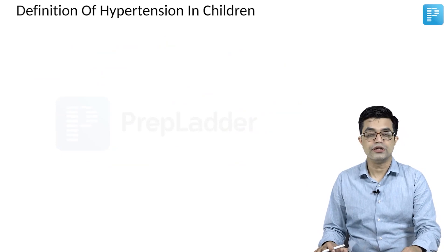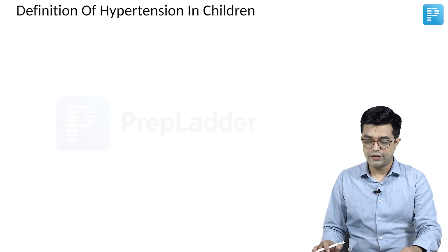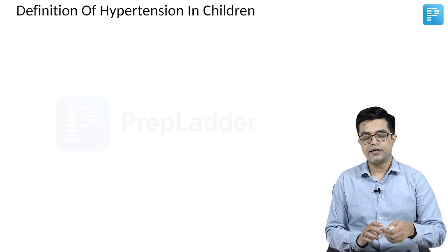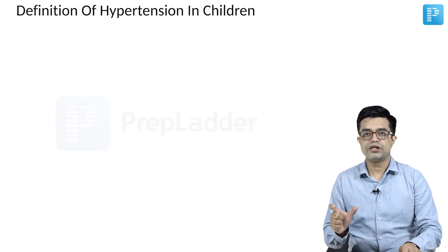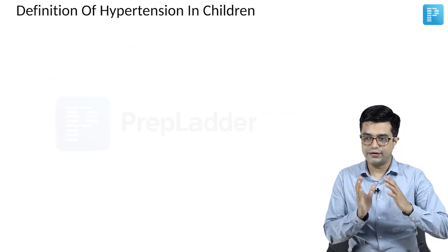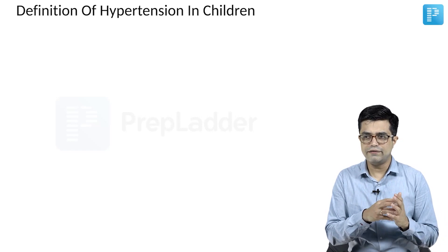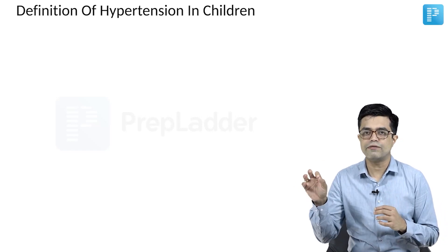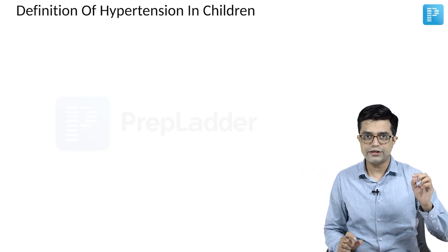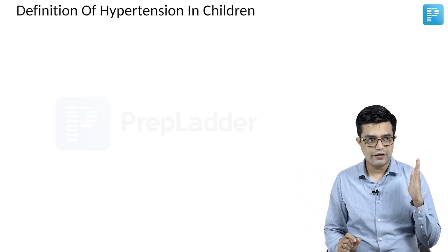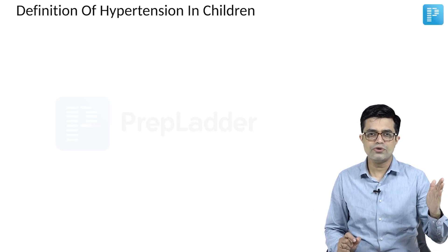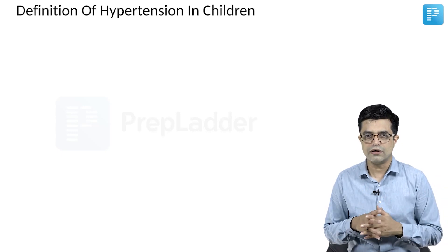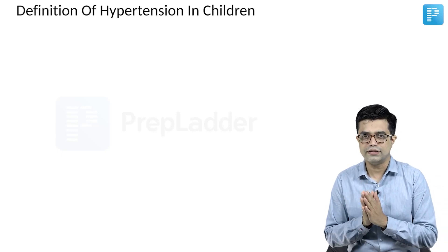What is the definition of hypertension in children? A centile-based system is used. There are two categories which are defined. There is a third category in which the definition of hypertension is tricky and we take the help of graphs or charts — that age group is the infancy period. Infancy period is usually not covered in these definitions. We will discuss some points related to it separately.